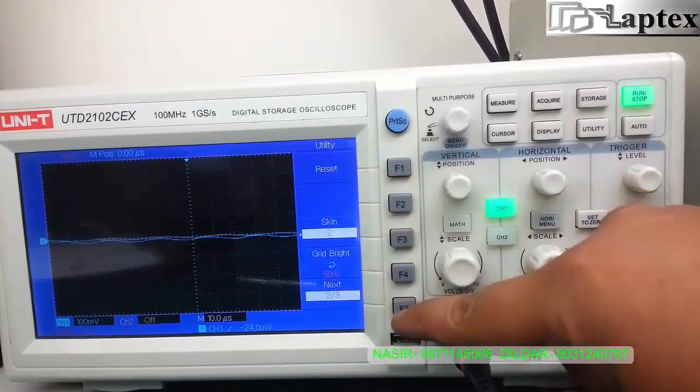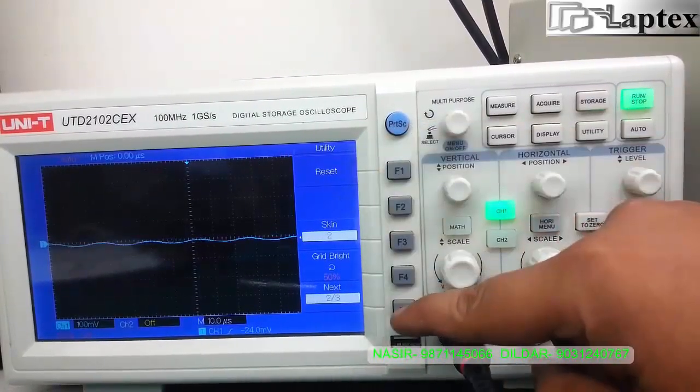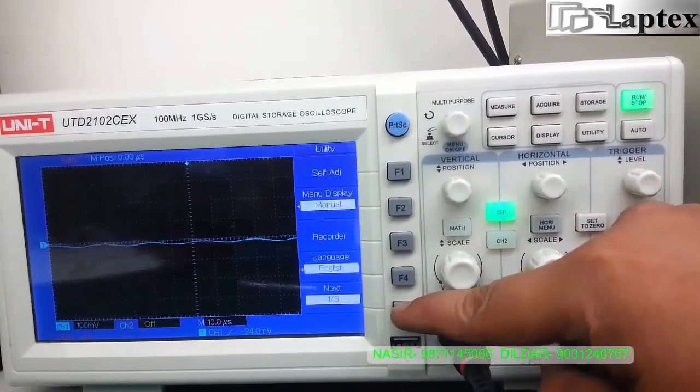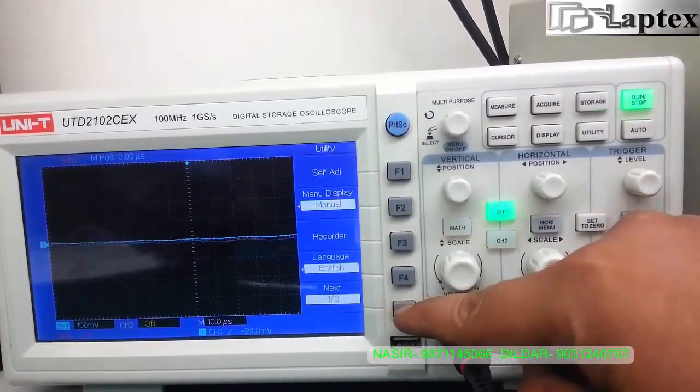Then you will get to see on the right corner of the screen different pages that are appearing on the screen, and you have F1, F2, F3, F4, F5 switches that are used to access those pages.